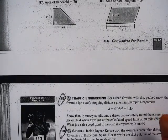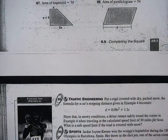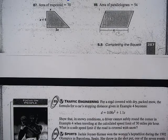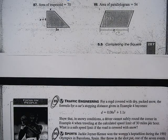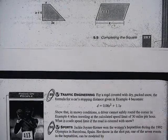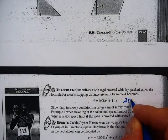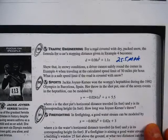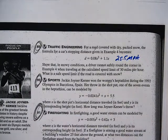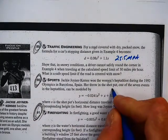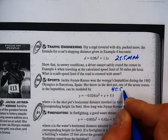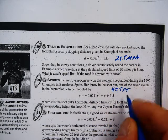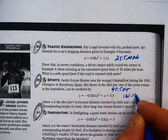89, about 25 miles per hour. And then 91, there's two distances, 45.5 feet and 161.16 feet.